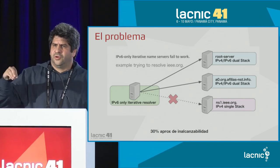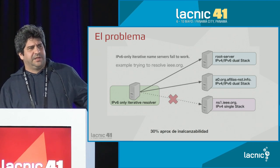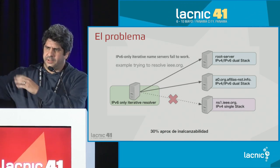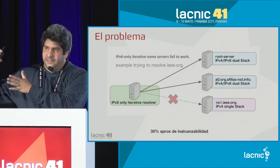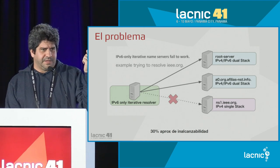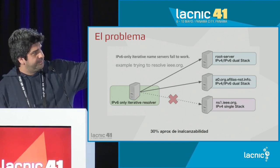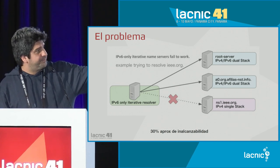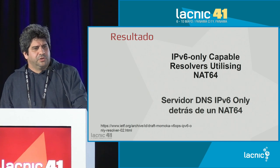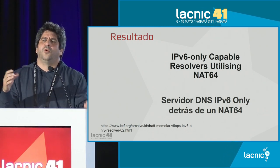This iterative resolver might be received through DHCP or through RA in the IPv6 world. If that server is located in an IPv6-only cloud, when it performs recursion to reach the root servers and TLD servers like dot-com or dot-net, if it encounters parts of the DNS tree that don't have IPv6 connectivity, then the resolution cannot be completed. This is a real example where the server reaches the root servers and dot-org servers but finally cannot resolve the name ieee.org.